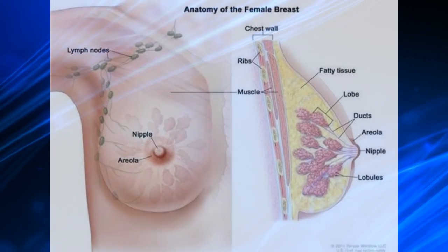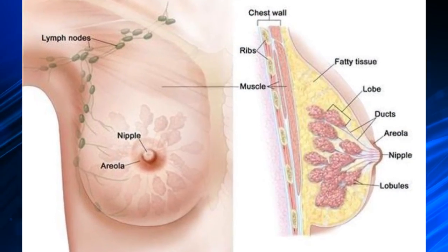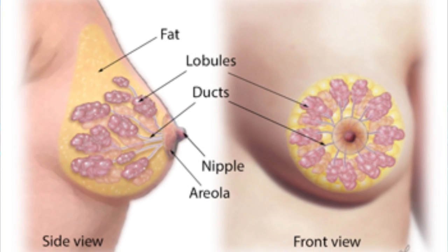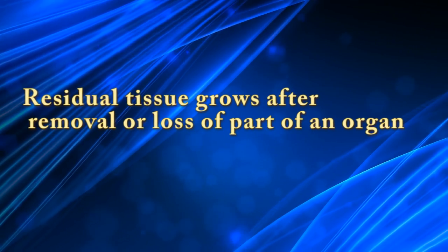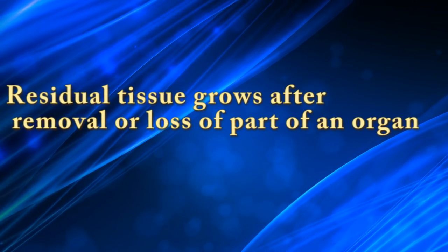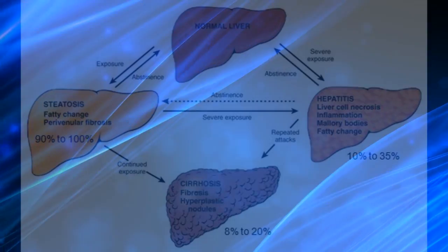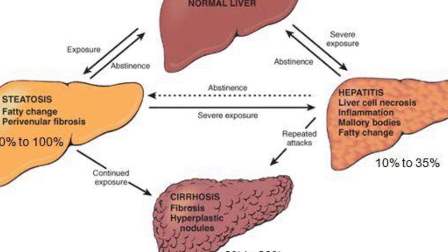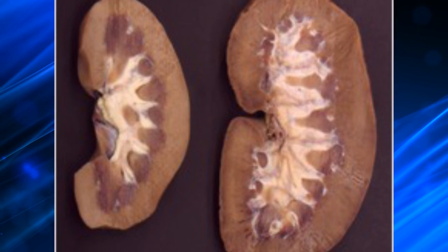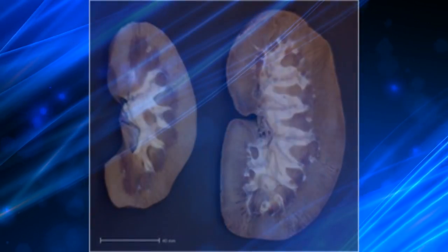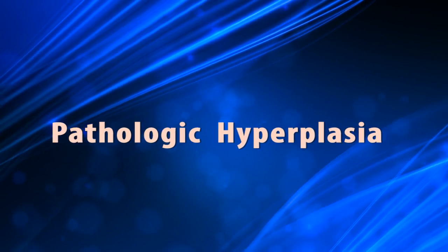Hormonal hyperplasia is exemplified by the proliferation of the glandular epithelium of the female breast at puberty and during pregnancy. Compensatory hyperplasia is when residual tissue grows after removal or loss of part of an organ. For example, when part of a liver is resected, mitotic activity in the remaining cells eventually restores the liver to its normal weight.